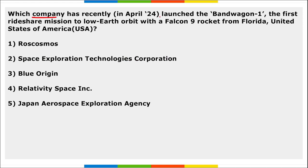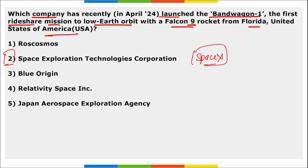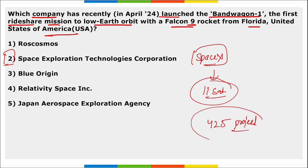Next: which company has recently launched Bandwagon One, the first rideshare mission to low Earth orbit, with the Falcon 9 rocket from Florida, USA? It is Space Exploration Technologies Corporation — that is SpaceX. SpaceX launched Bandwagon One, the first rideshare mission to low Earth orbit, using the Falcon 9 rocket. Bandwagon One carried 11 satellites. Note the 425 Project — this is South Korea's satellite and is one of the largest of the 11 satellites carried by Bandwagon One.